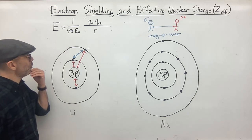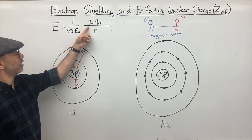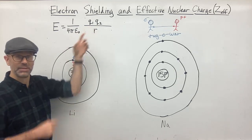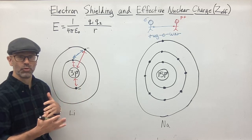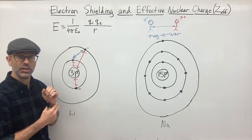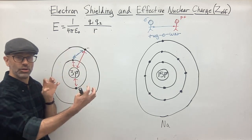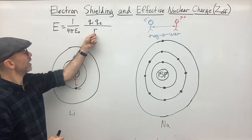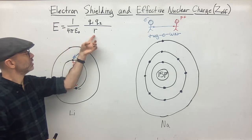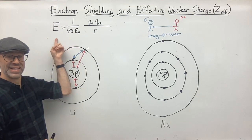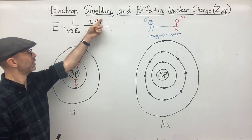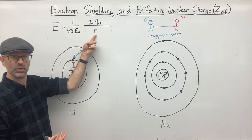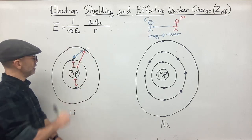Remember what we were talking about with Coulomb's Law: when we have two charges that are the same sign — either both positive or both negative — they're going to be repelling each other. They want to be farther apart. Increasing the distance between them is going to lower the potential energy, making it less positive. Minus times minus gives you a positive, so increasing the distance lowers the potential energy.